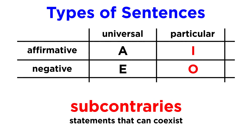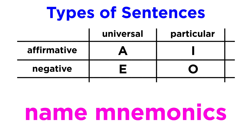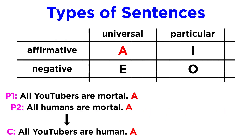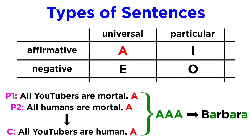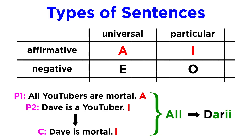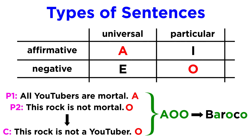I and O, on the other hand, are subcontraries, as they can coexist. Aristotle also used name mnemonics to refer to certain kinds of syllogisms. If one is composed of three universally positive sentences — for example, all YouTubers are mortal, all humans are mortal, thus all YouTubers are human — we would call it an AAA syllogism, and its mnemonic would be Barbara, with each of its vowels representing one sentence of the syllogism. Other examples would be Darii for AII, which describes our original example, and Barroco for AOO — as in: all YouTubers are mortal; this rock is not mortal; this rock is not a YouTuber.